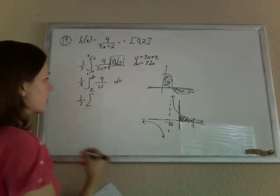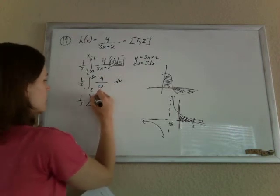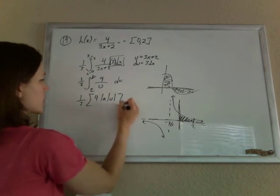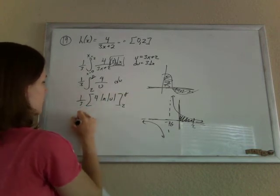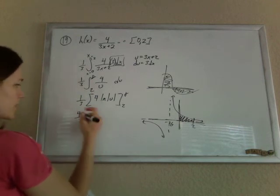Because the integral of 4 over u is just 4 times the ln of the absolute value of u. And so we're taking that from 2 to 8. So we have, I was going to say 4 thirds, if I move the 4 out to the front.